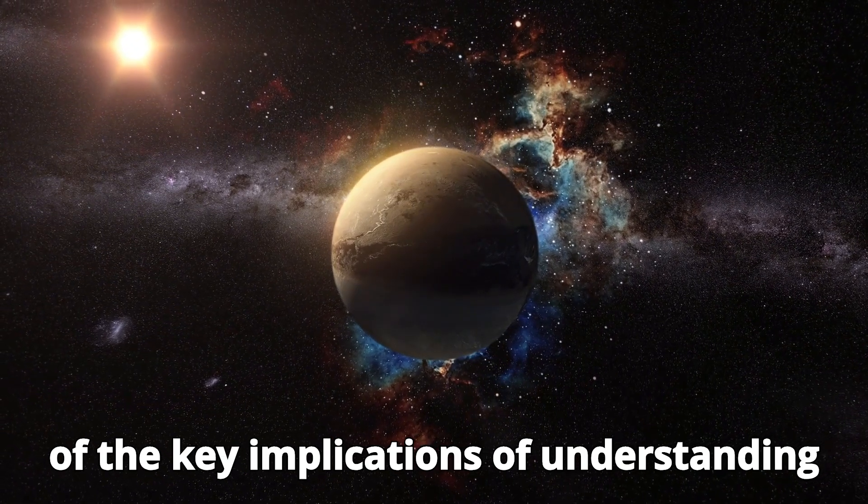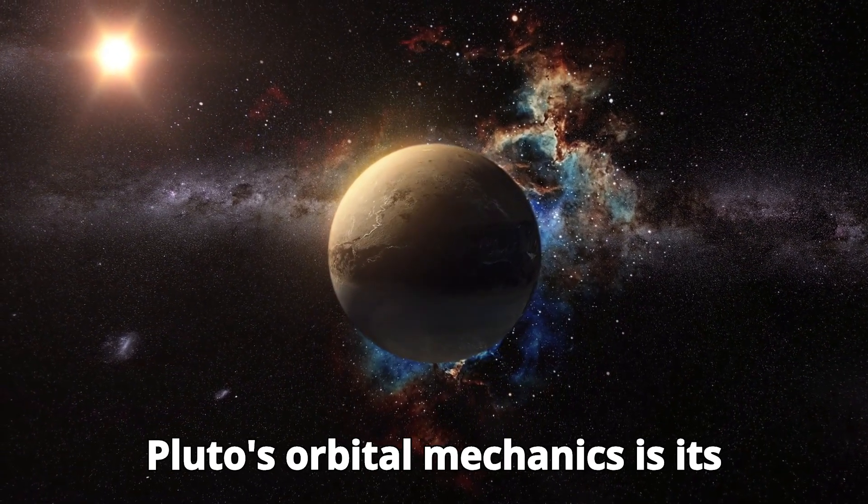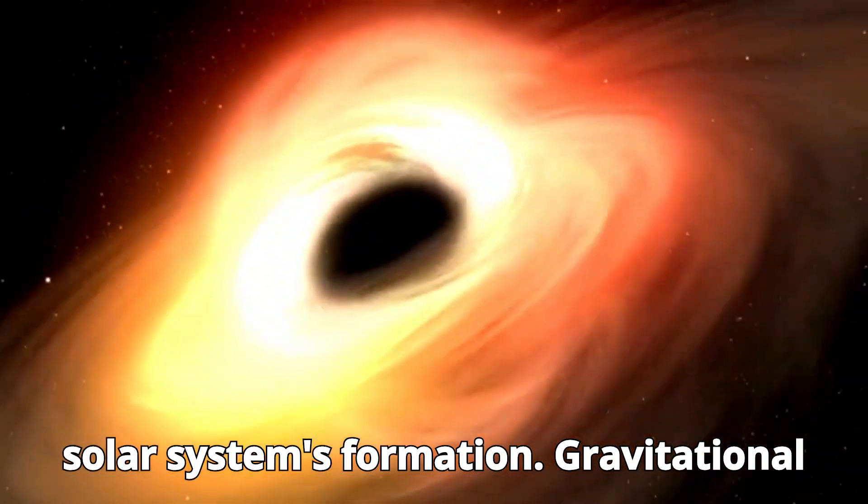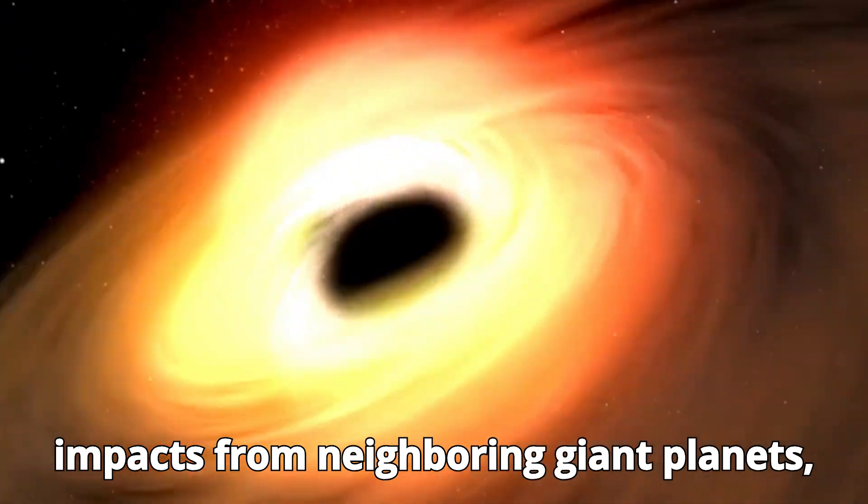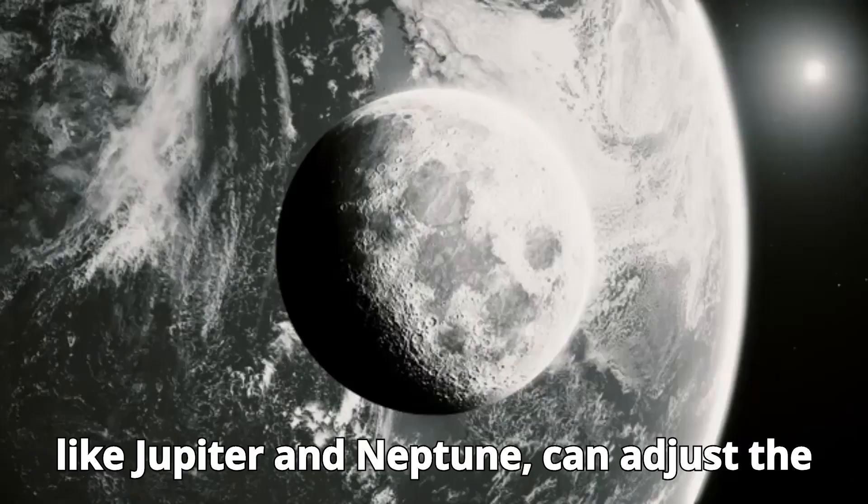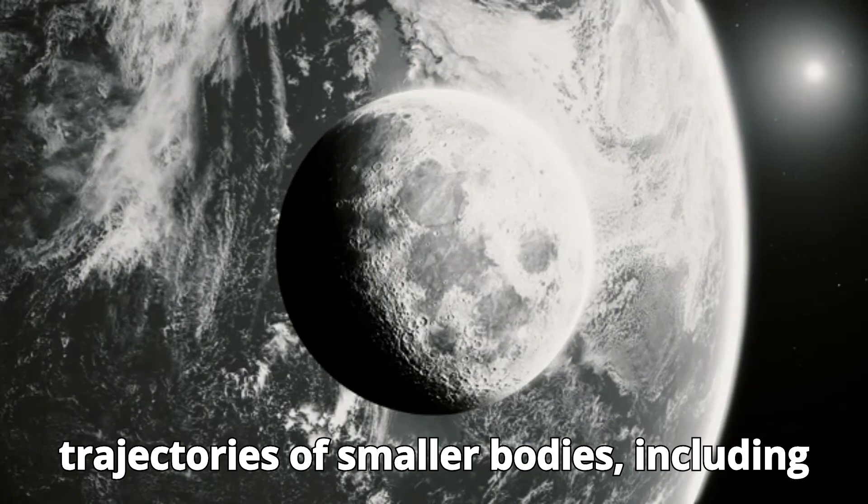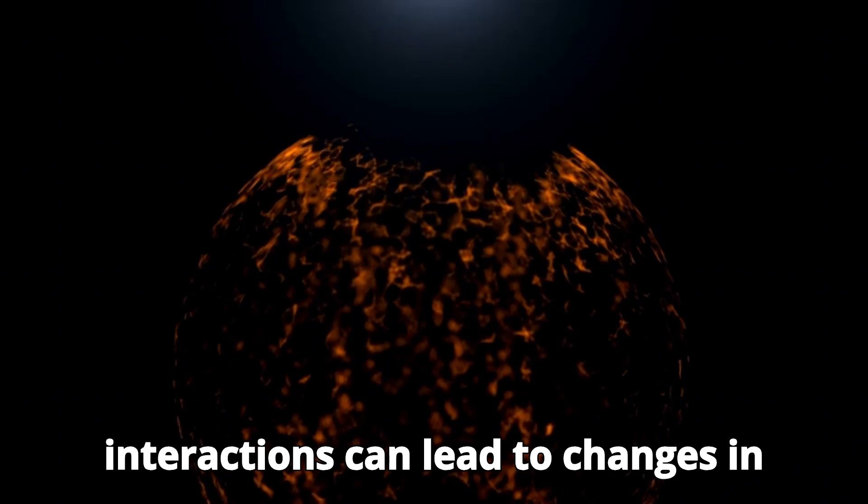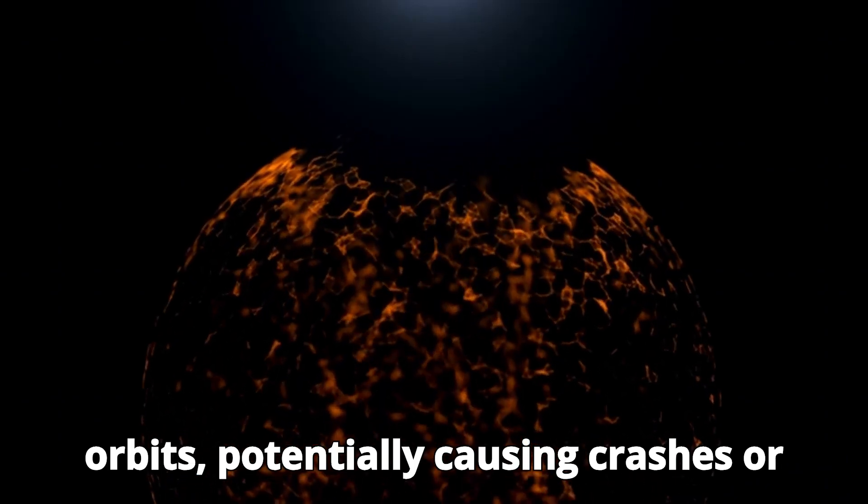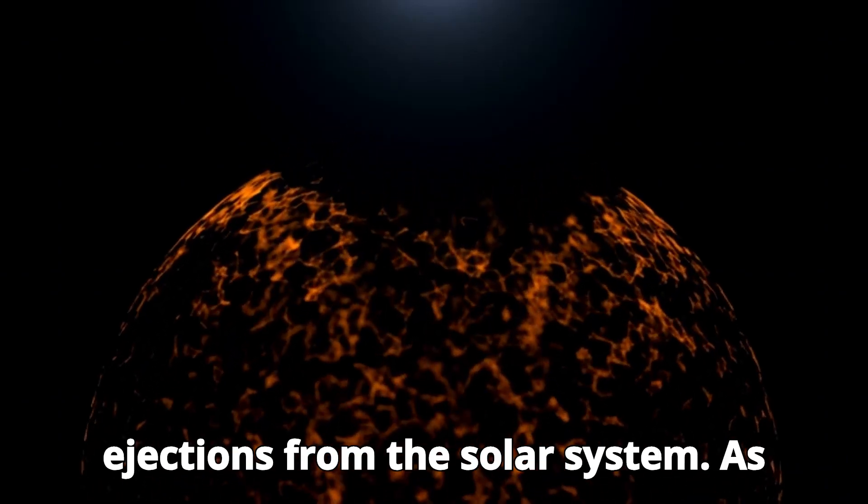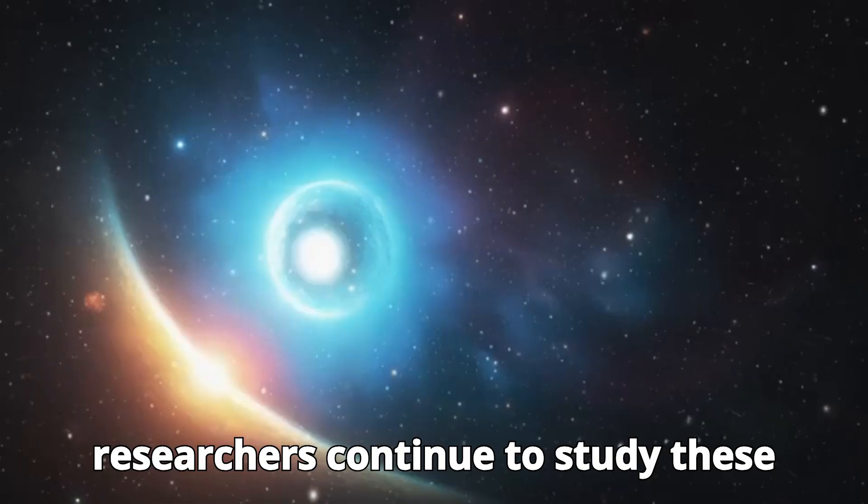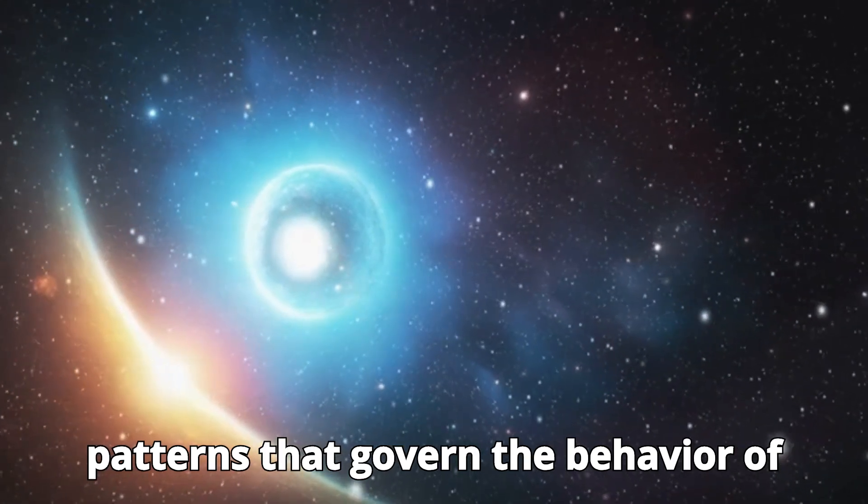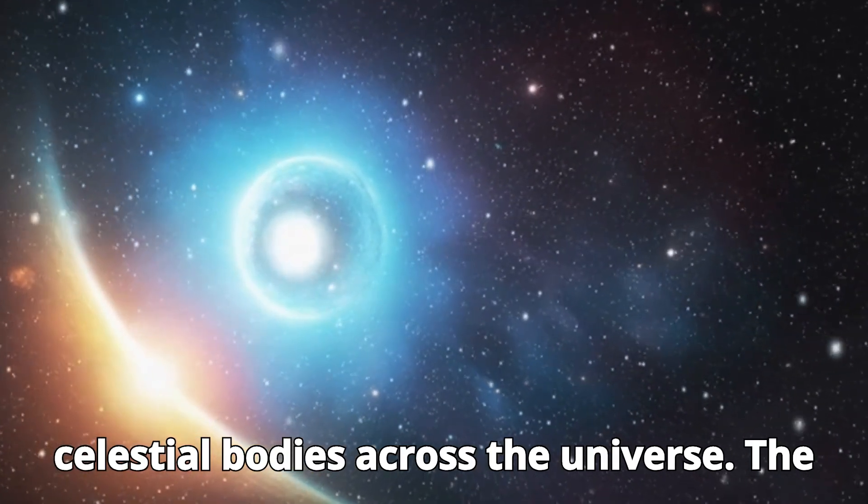One of the key implications of understanding Pluto's orbital mechanics is its potential impact on how we understand the solar system's formation. Gravitational impacts from neighboring giant planets, like Jupiter and Neptune, can adjust the trajectories of smaller bodies, including those in the Kuiper belt. Such interactions can lead to changes in orbits, potentially causing crashes or ejections from the solar system. As researchers continue to study these interactions, they may uncover broader patterns that govern the behavior of celestial bodies across the universe.